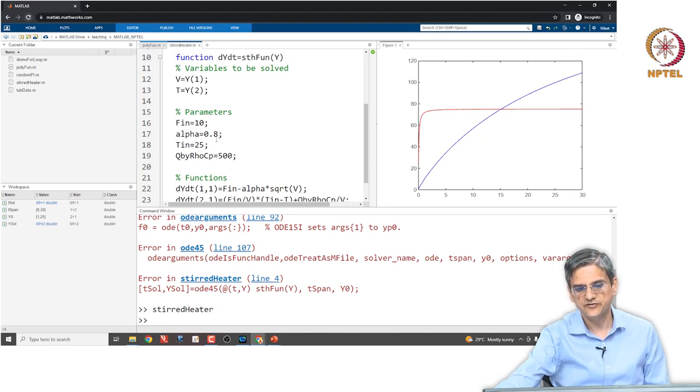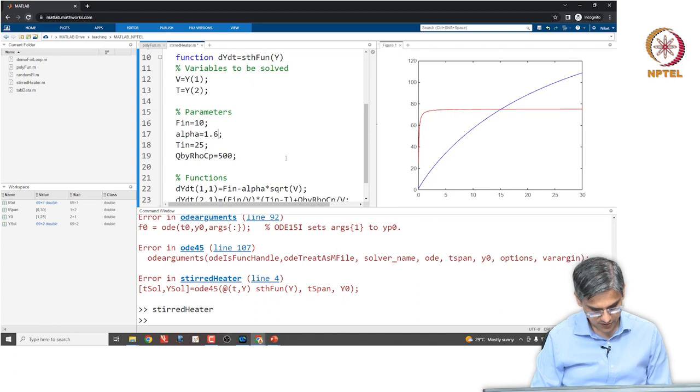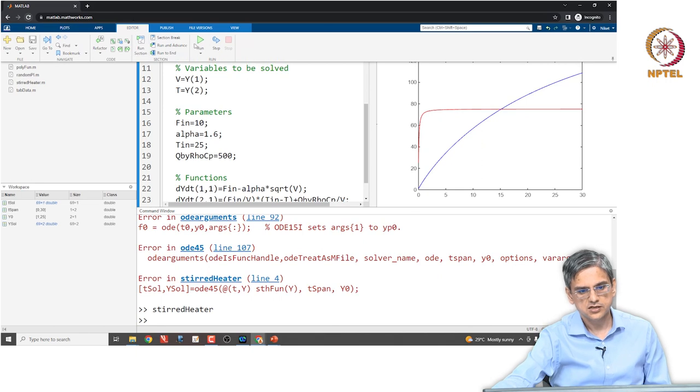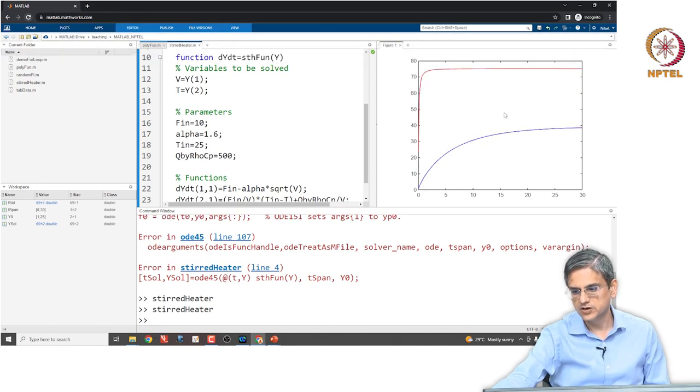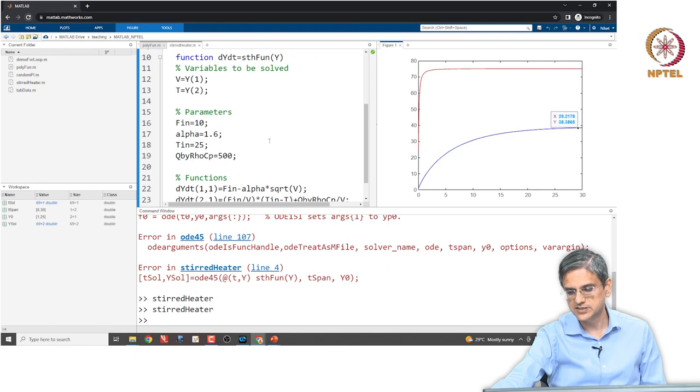That is because of the values of f in and alpha. Let us say if the alpha was 1.6, what is going to happen? If the alpha was 1.6, what we are going to get is the volume will settle down at lower value. The volume has settled down at approximately 38 liters. That was what I intended to be the alpha, the actual value of alpha for a 40 liter vessel is 1.6 and not 0.8. But again, you can do various checks for how the system responds.